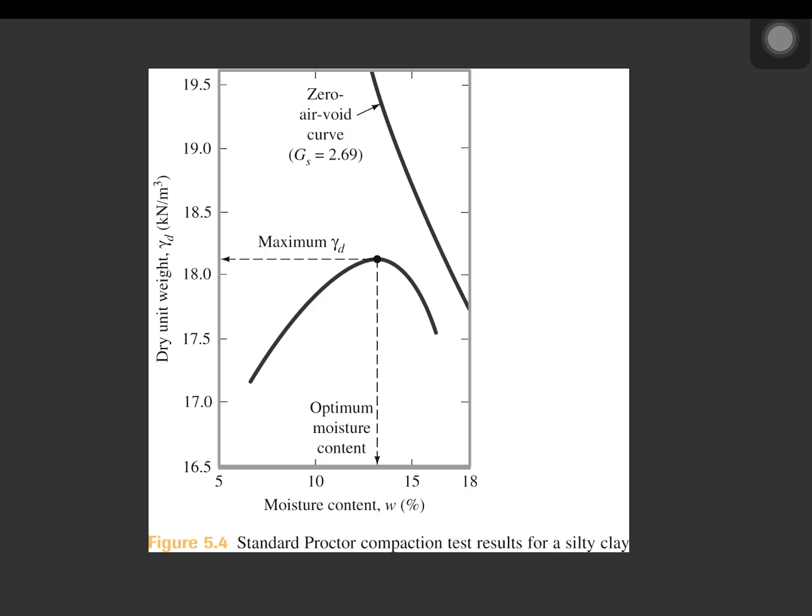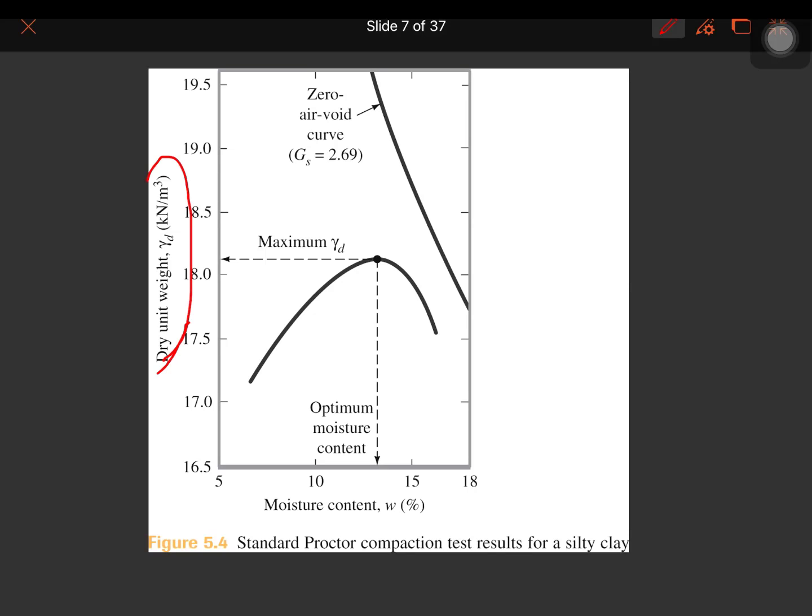Here in our figure, we can see a standard proctor test results for a silty clay. Here is the value of the dry unit weight and the moisture content plotted. As the moisture content increases, the dry unit weight of a soil also increases, as you can see here in our screen, until it reaches a certain point on which the maximum dry unit weight is attained.